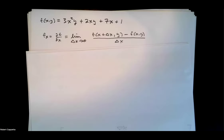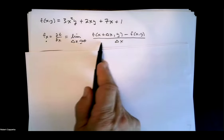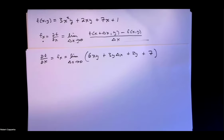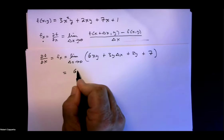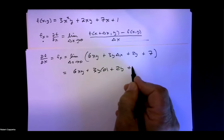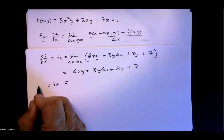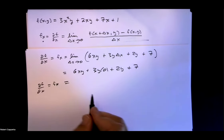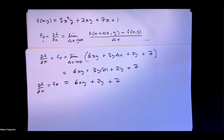The last thing to do: remember the partial derivative with respect to x is the limit as delta x goes to zero of that expression. Taking that limit, delta x goes to zero, so 3y times zero vanishes, and our final answer — the partial derivative of f with respect to x — is 6xy plus 2y plus 7. That's our limit definition of the partial derivative.